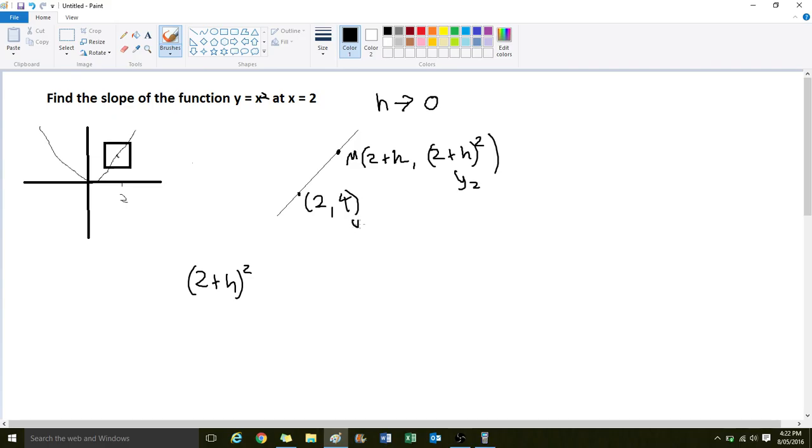y2, y1, x2, x1. So we've got 2 plus h squared take away 4 divided by 2 plus h take 2.